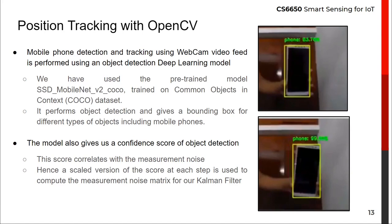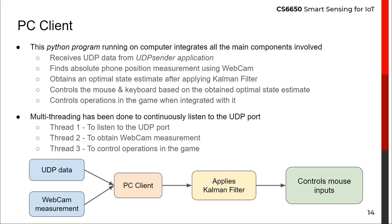The measurement of state position is done using the webcam video processed with OpenCV. We used an object detection deep learning model that performs detection and provides a bounding box for the mobile phone, along with a confidence score which is fed into the Kalman filter as the measurement noise uncertainty, improving the estimate of all states. The Python program sits at the heart of our implementation, running on the PC. It receives the UDP data, makes measurements from the webcam feed, processes this using the Kalman filter incorporating the IMU inputs, and outputs a cursor position, actually moving the cursor to that position. Keyboard inputs from UDP are also processed, and multi-threading ensures all these processes run simultaneously, with a separate thread managing game operations.